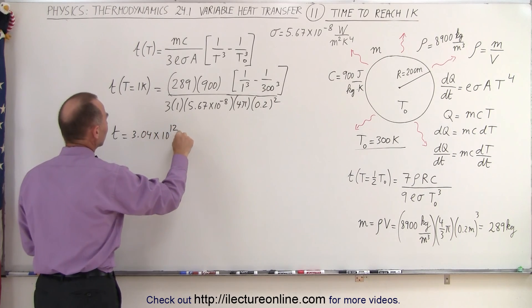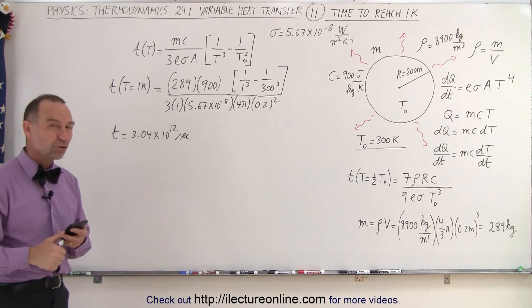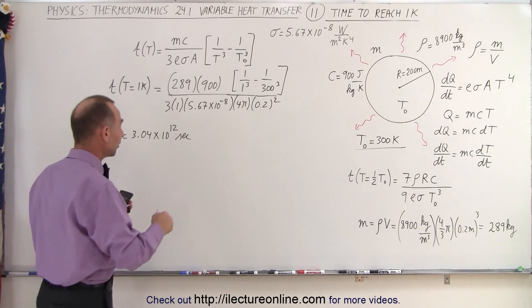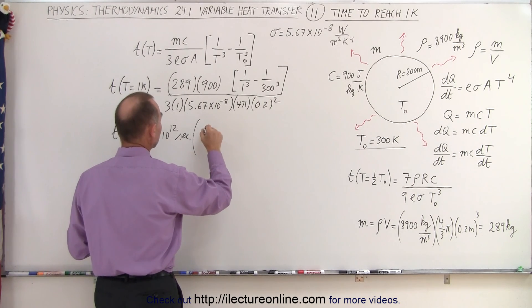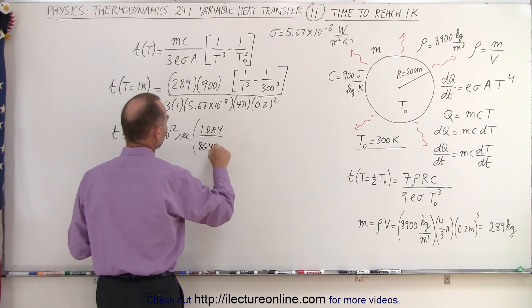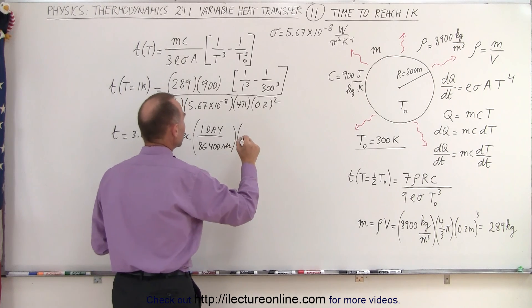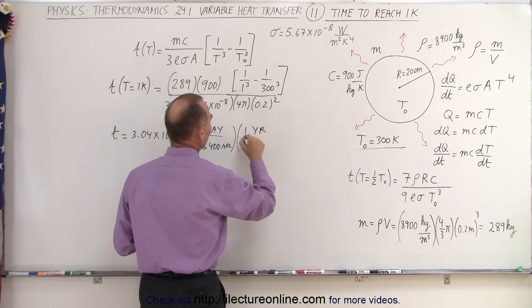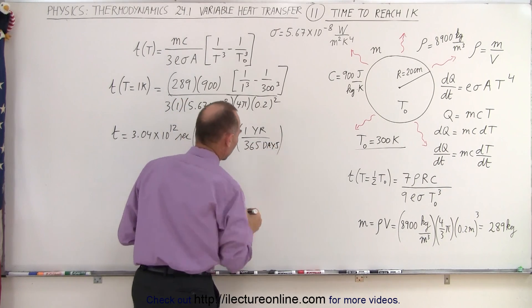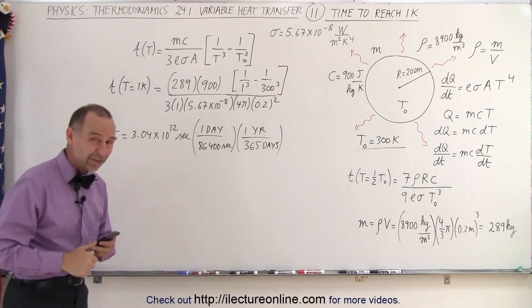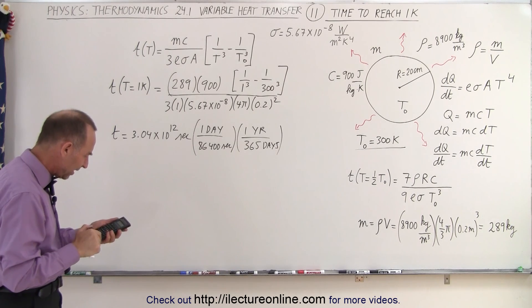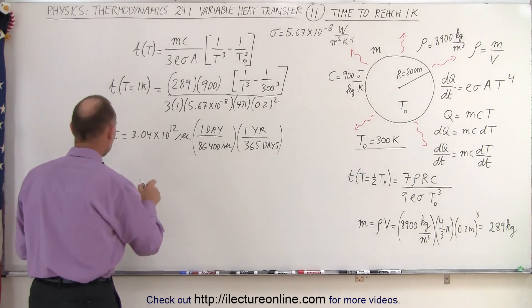That would be in seconds, so we're talking about three trillion seconds. Wow, that's an enormous amount of time. To put things in perspective, let's convert that to days. That would be one day divided by 86,400 seconds, and then let's convert it to years—that would be one year divided by 365 days. I know that's actually 365 and a quarter, but that's close enough. Let's see how many years that would be. So that's divided by 86,400 divided by 365, and it would be 96,000 years.